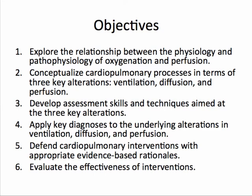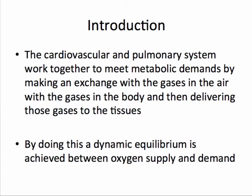The cardiovascular and pulmonary system work together to meet metabolic demands by making an exchange with the gases in the air, with the gases in the body, and then delivering those gases to tissues. By doing this, a dynamic equilibrium or changing balance is achieved between oxygen supply and demand.